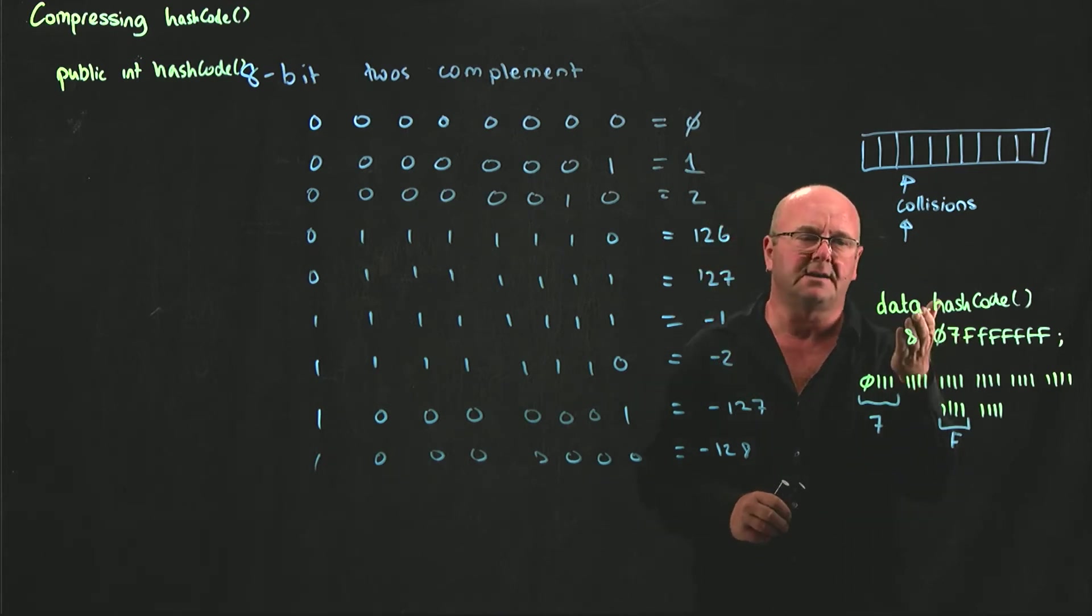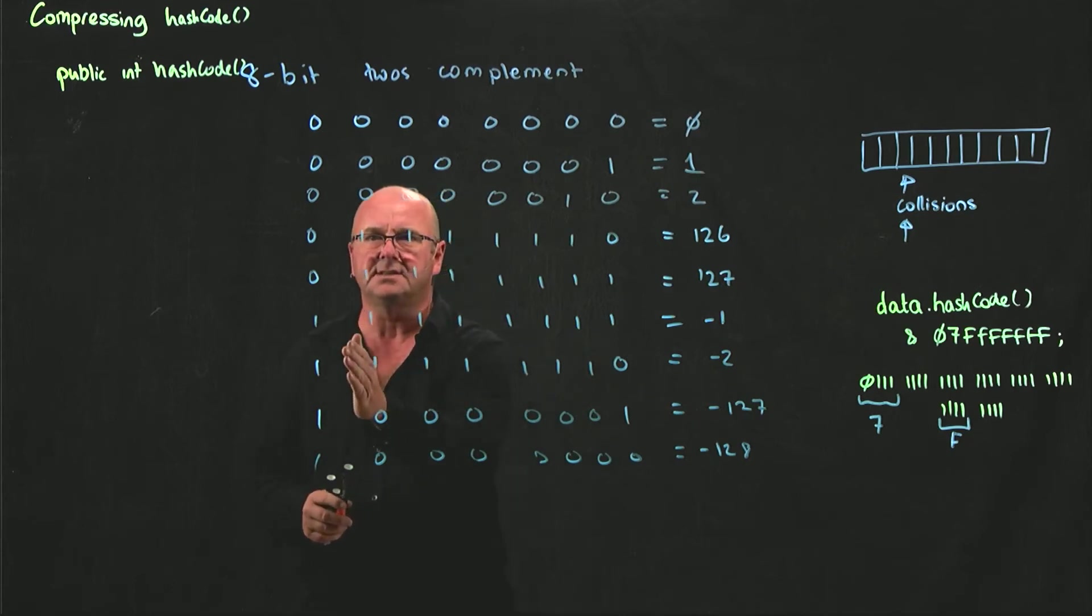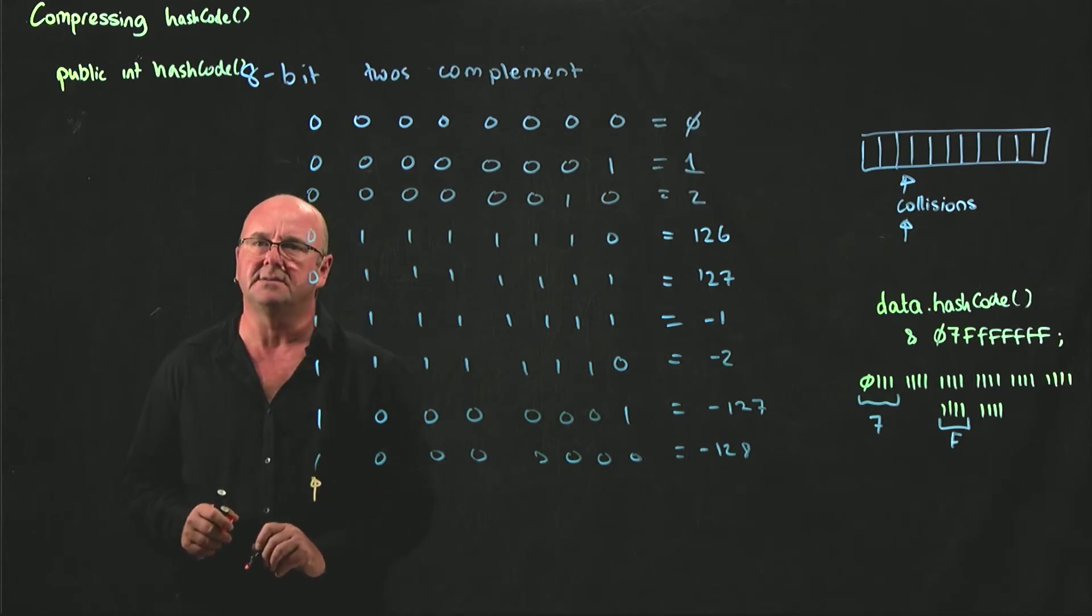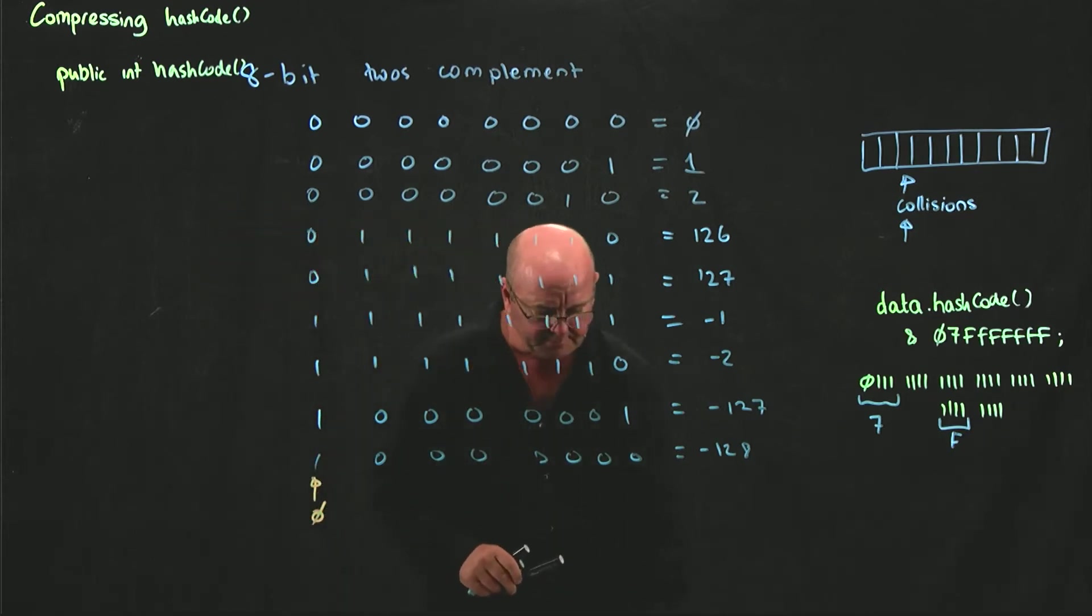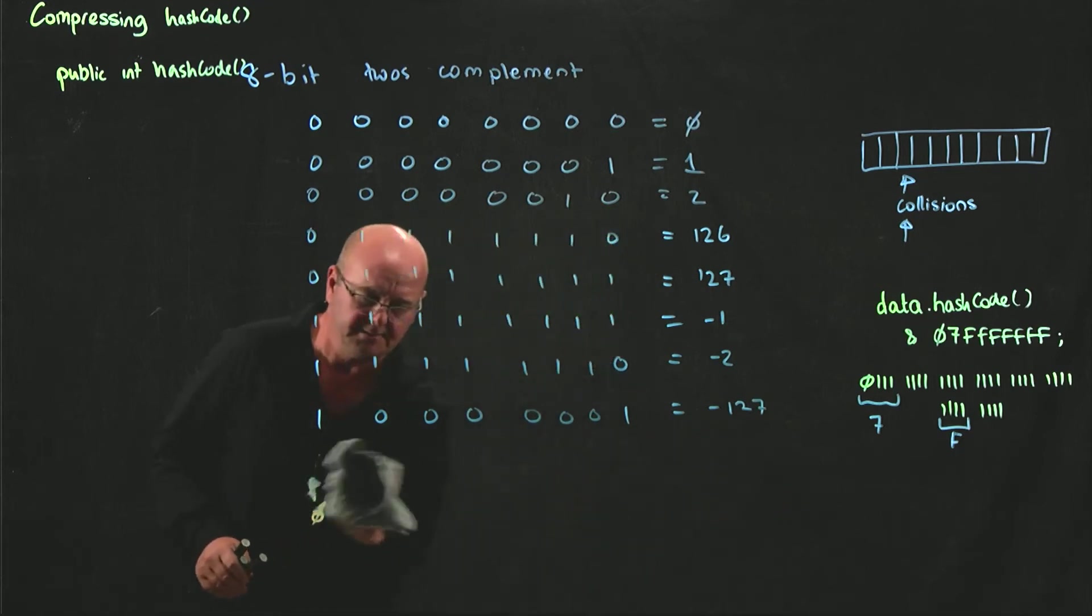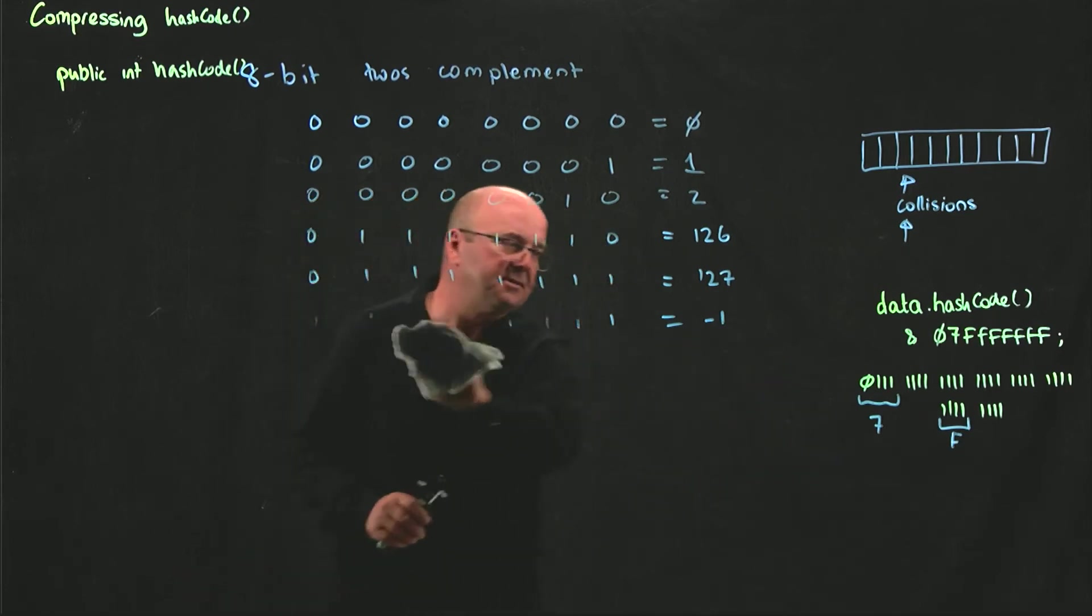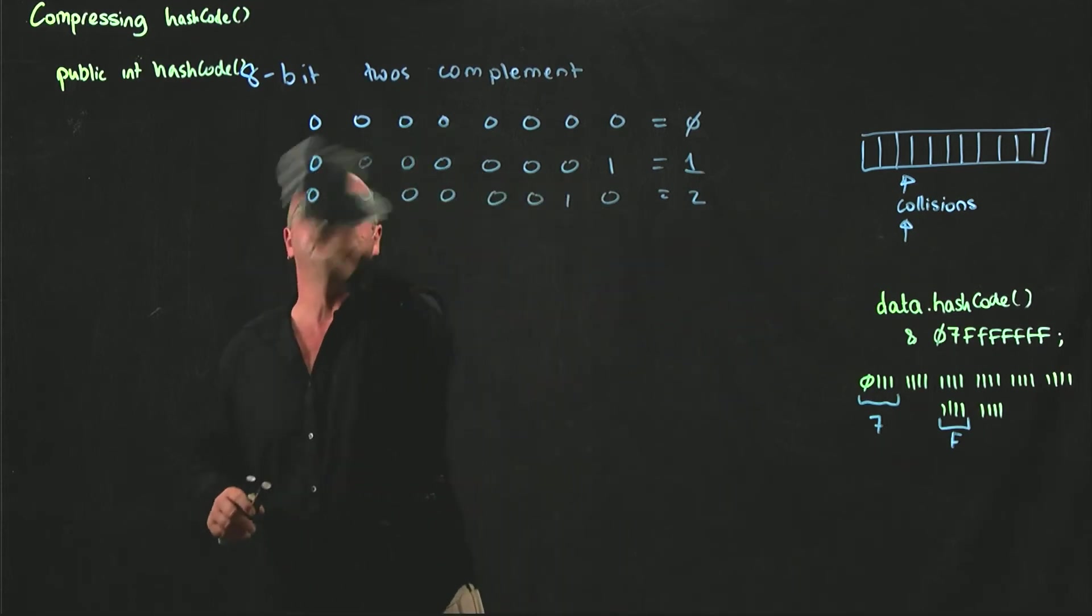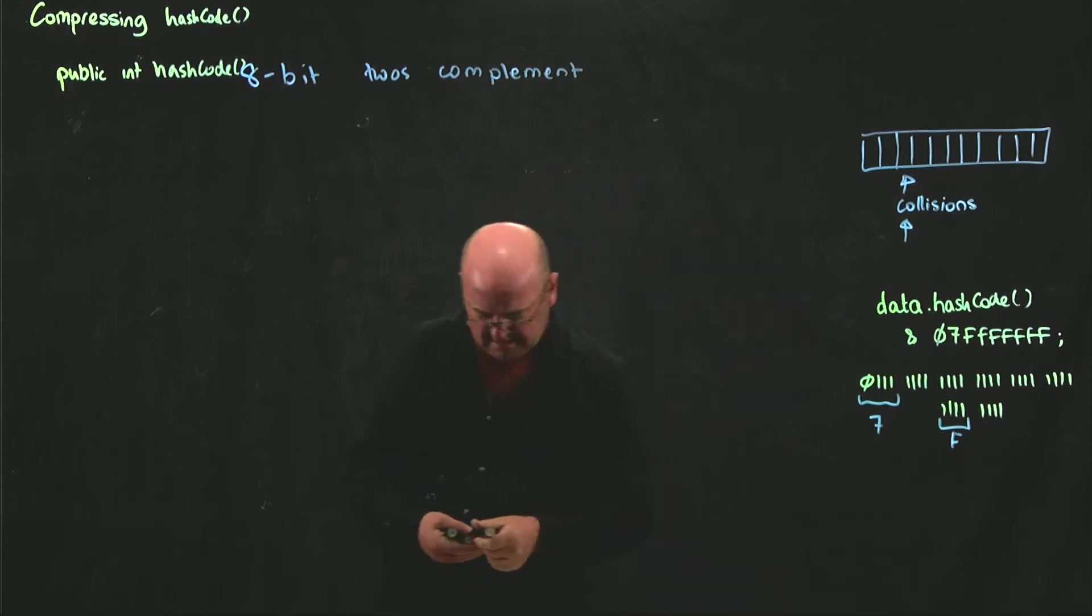So we have our 7, and then we have 7 f's. And so what that does when we AND our number with this hex number is we keep every digit the same except the first. And if the first is 1, we set it to 0. And if the first is already 0, we leave it where it is.